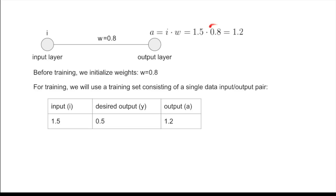With the current weight, however, you can see that it actually produces 1.2. We need to define the error for the network to be able to train itself. We use the mean squared error as our cost function. So, we simply take the difference between the desired and the actual output, and that's squared.